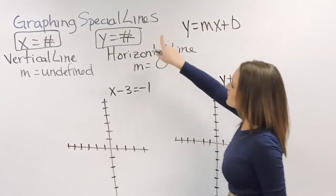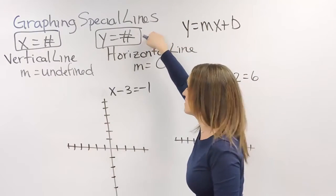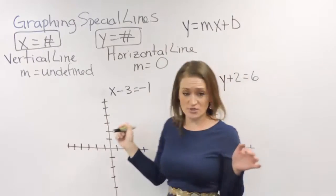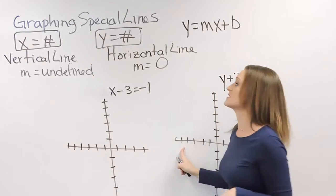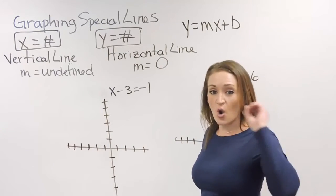So if you have this situation over here where you have y equals a number, this is a horizontal line, so it runs side by side, just like the x-axis. And the slope for those are always zero.